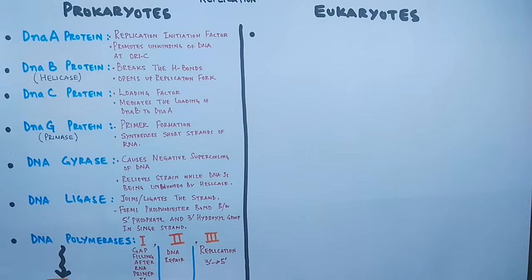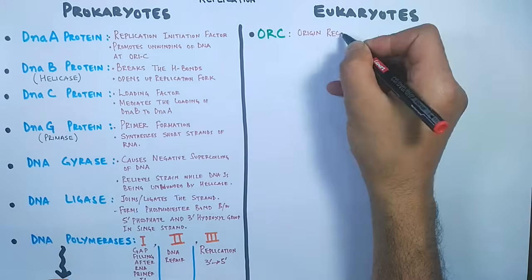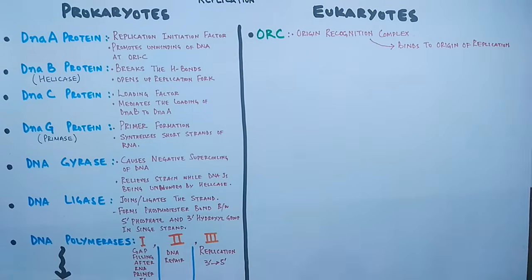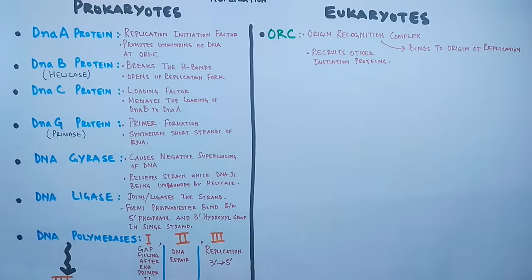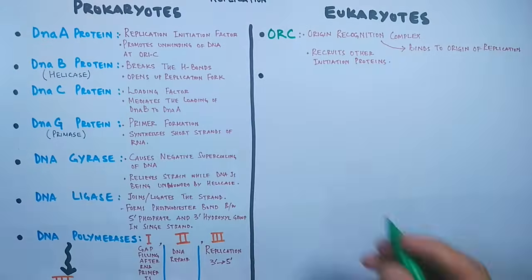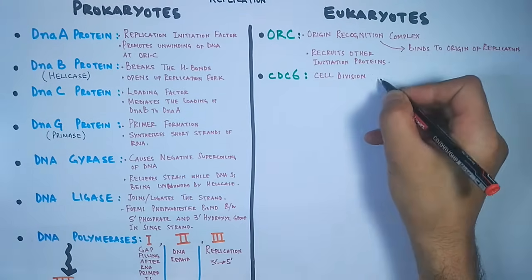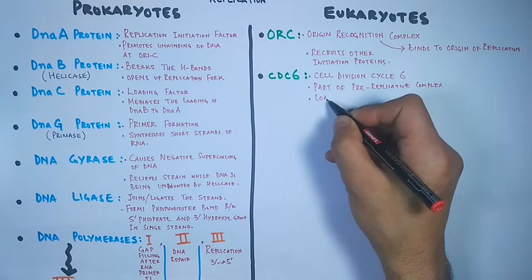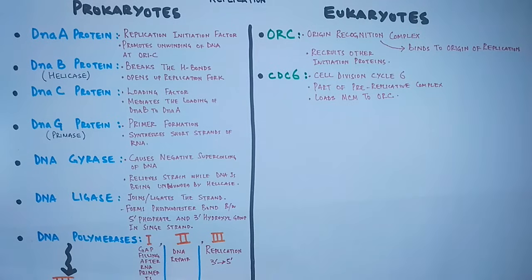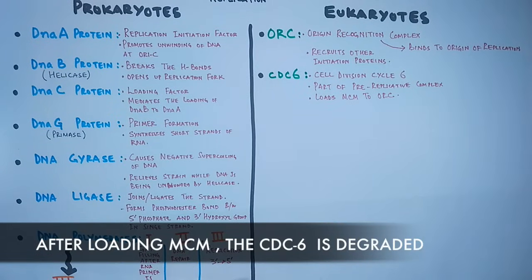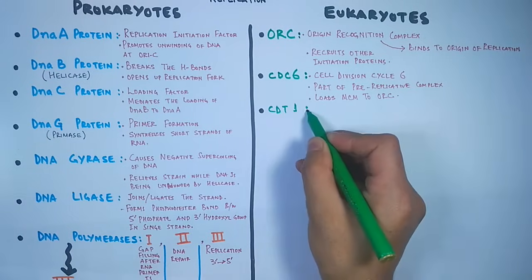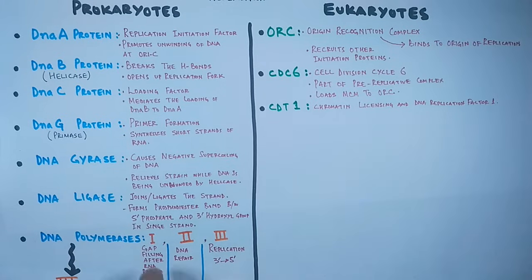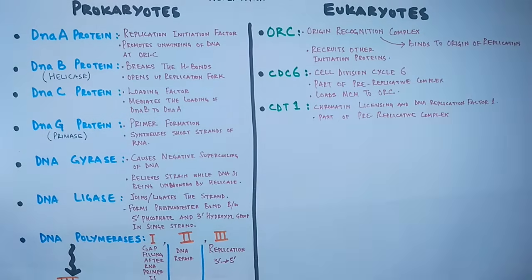These are the essential enzymes and proteins involved in the process of DNA replication in prokaryotes. Now let's move towards eukaryotes. First we have ORC — the Origin Recognition Complex — which recognizes the origin of replication site, binds to it, and then other proteins are recruited. Then we have CDC6 protein, a cell division cycle protein that is part of the pre-replicative complex. Its function is to load MCM to the ORC.